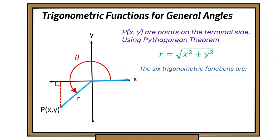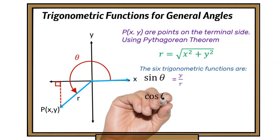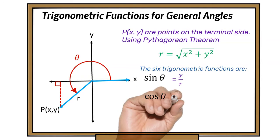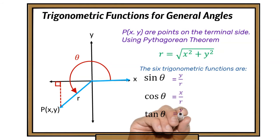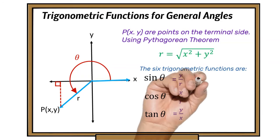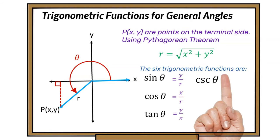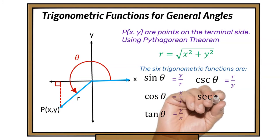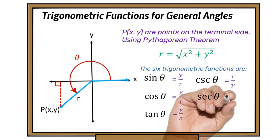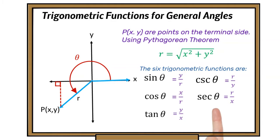With a triangle formed, we can define the six trigonometric functions. Sine of theta is y over r, cosine of theta is x over r, and tangent of theta is y over x. The cosecant of theta is the reciprocal of sine, so it's r over y. The secant is the reciprocal of cosine, so that's r over x. And the cotangent is the reciprocal of tangent, so that's x over y.